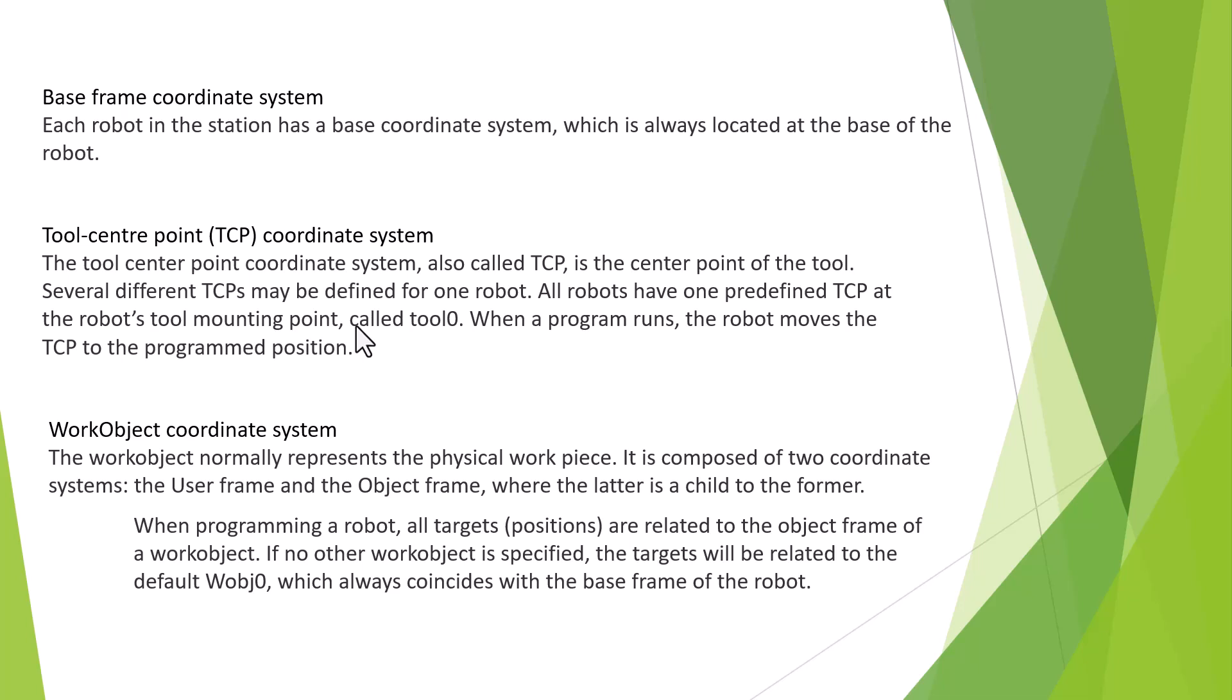Some robots have a tool to do something. It is called tool center point, TCP, or coordinate system. If your ABB robot is working to pick up objects and do something with objects, this is the work object coordinate system. It is called user frame coordinate system and object frame coordinate system.